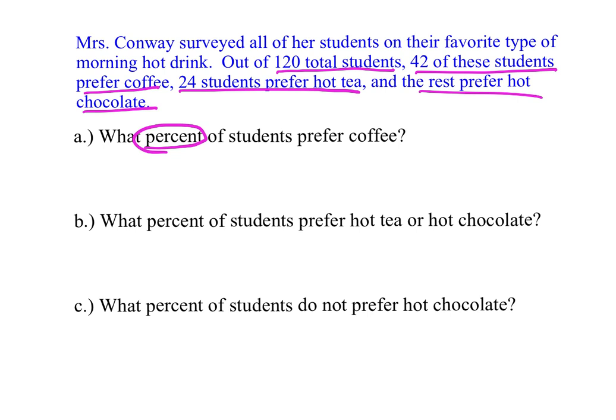The first question says: what percent of students prefer coffee? From looking at this it might seem like we can't find a percent, but we actually can. We're going to use our knowledge of fractions, decimals, and percents. Since 42 students prefer coffee out of 120 total students, I can write that as the fraction 42 over 120.